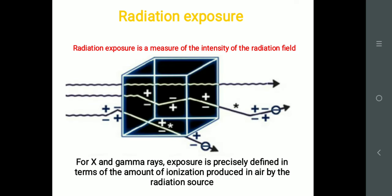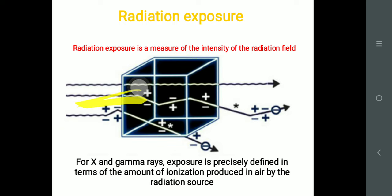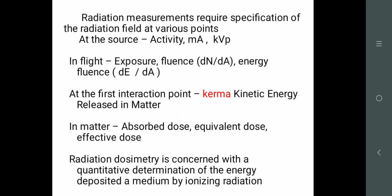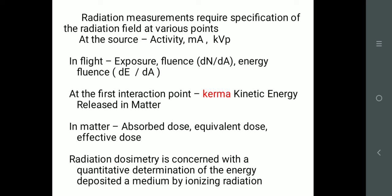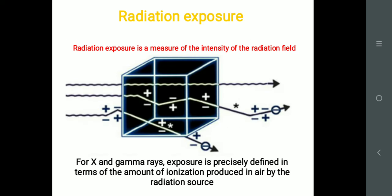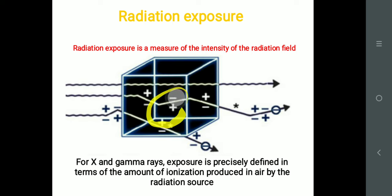Once the X-ray comes out, suppose this is a tissue — this is the incident ray and this is the transmitted ray. Always keep in mind that the incident ray will be more. If 100 kV goes in, perhaps only 50 kV comes out, because absorption happens here. That is what is called attenuation — the degree of absorption and degree of scattering.